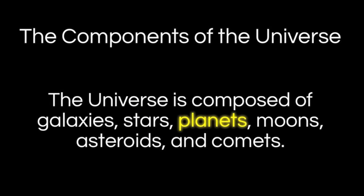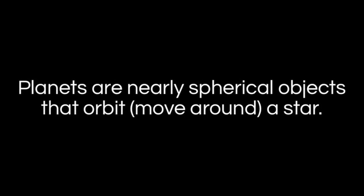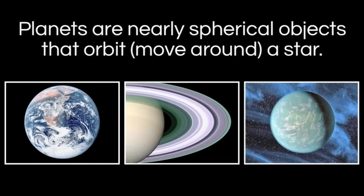Now we'll move on to planets. Everyone knows the word planet, but it's actually a very tricky thing to define. We'll stick to a simple definition: planets are nearly spherical objects that orbit or move around a star. I say nearly spherical because we are yet to discover a planet that is a perfect sphere — every planet is slightly oval in shape, though they generally are close to being spherical. On the left is Earth, in the center is Saturn, and on the right is a drawing of the recently discovered planet Kepler-22b.